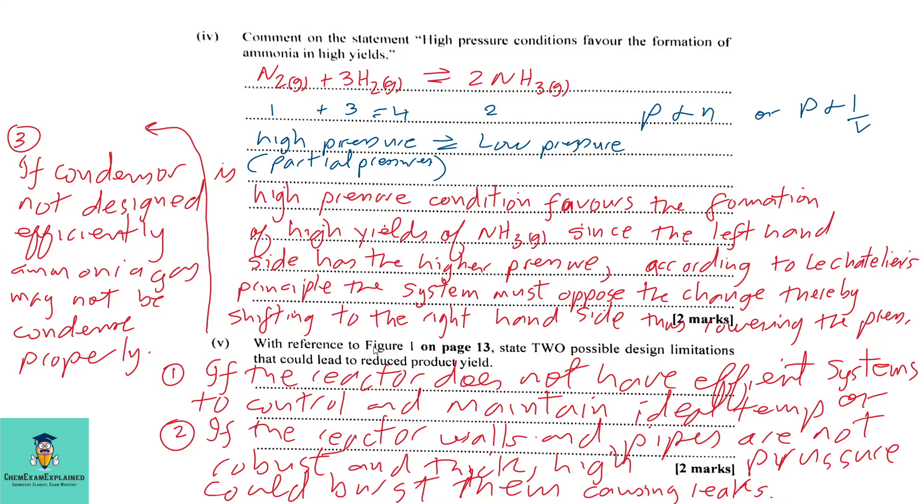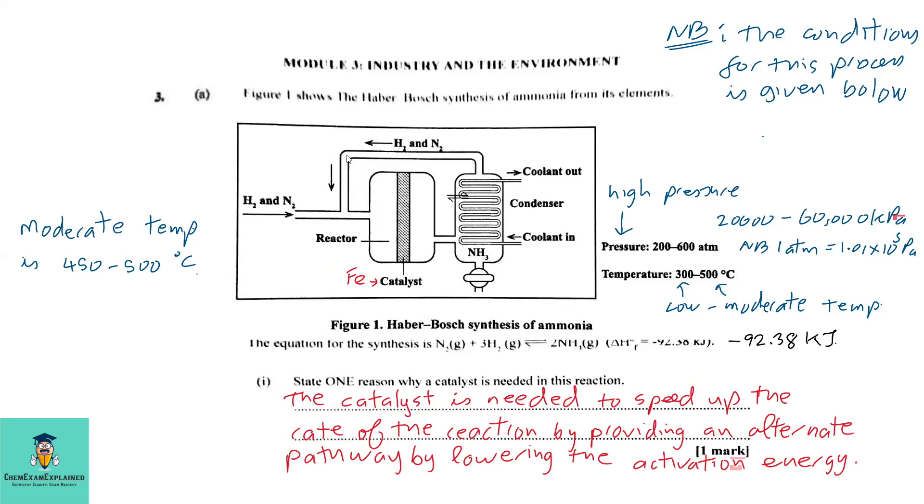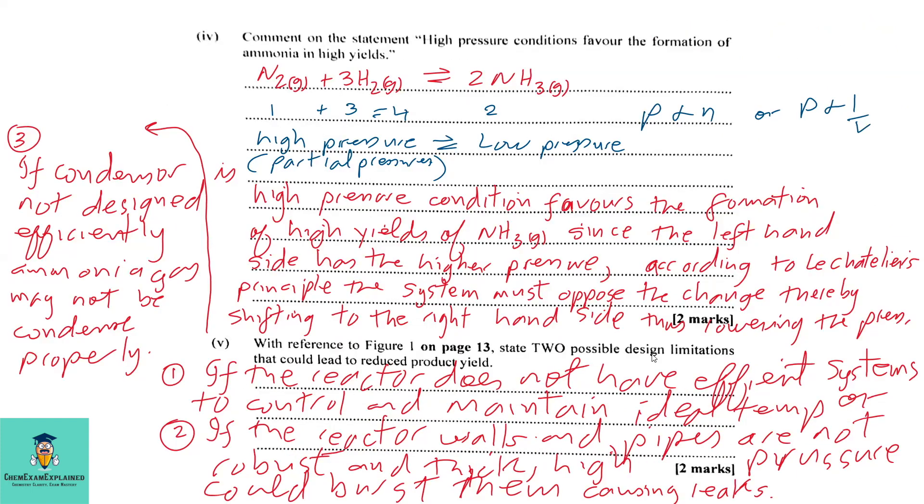Part 5: With reference to figure 1 on page 13, state two possible design limitations that could lead to reduced product yield. Let's look back at the diagram. Notice we have gases coming in and we have pipes. So we can consider the pressure that the pipes can withstand. We can look at the reactor and we can discuss the condenser. So these are the areas we're going to focus on to look at the limitations of this process. So let's begin to answer the question in looking at the possible design limitations. One, if the reactor does not have efficient systems to control and maintain ideal temperature, that could be one of the design limitations. Two, if the reactor walls and pipes are not robust and thick, high pressures could burst them causing leaks. And three, if the condenser is not designed efficiently, ammonia gas may not be condensed properly.